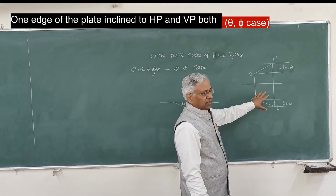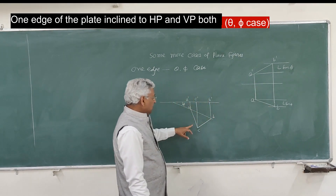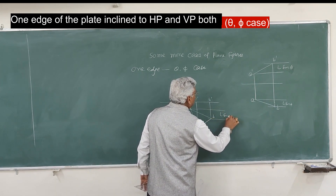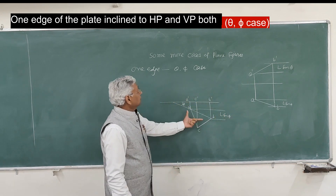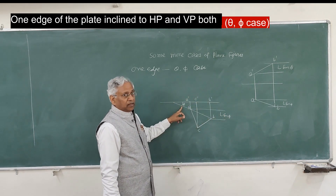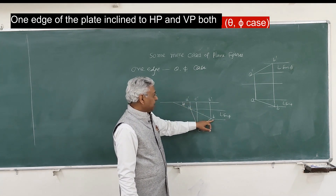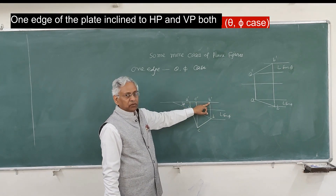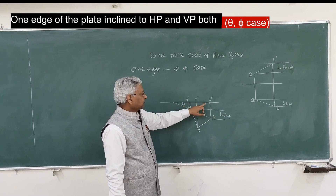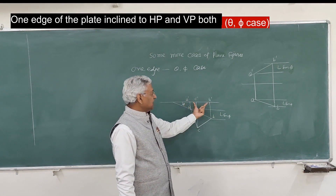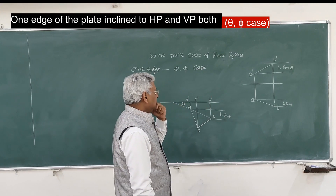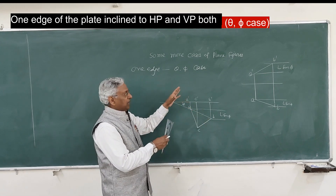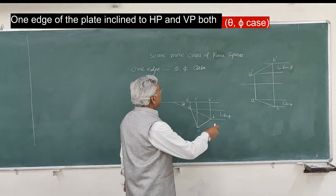L·sin(theta) is the elevation difference and L·sin(phi) is the plan difference. That is the condition to be satisfied if a line is inclined to both planes. The plan difference between A and B is L·sin(phi), but the elevation difference between A and B is zero because both points lie on the ground line.